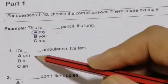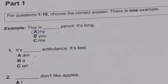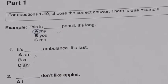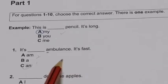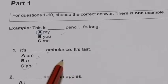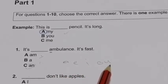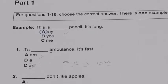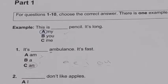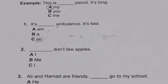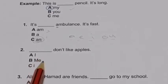The best answer is 'an.' Do you know why? Because 'ambulance' starts with a vowel. We have five vowels: A, E, I, O, U. Any word that starts with these sounds takes 'an' before it. So I will answer 'an' for number 1.